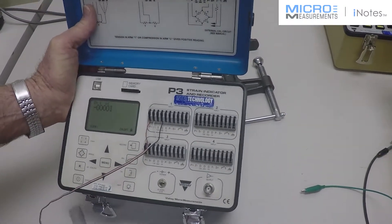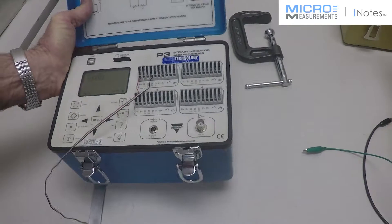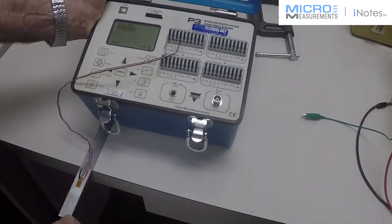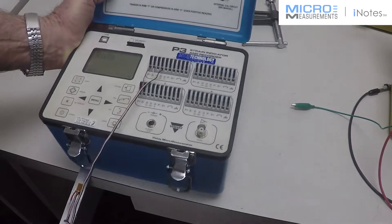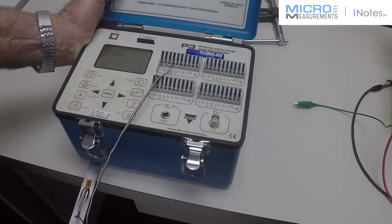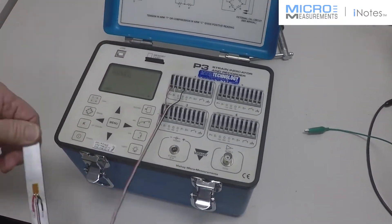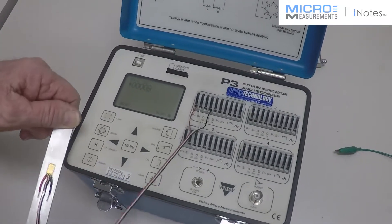So now I can apply a load, and I can see here applying a load I can get a positive output from zero, and if I apply a load and take it off it comes back to zero.